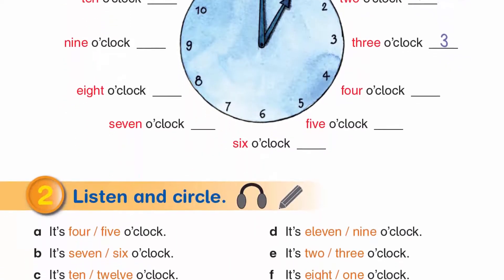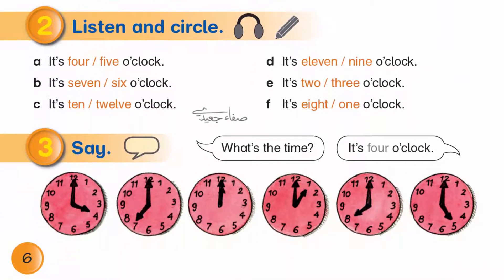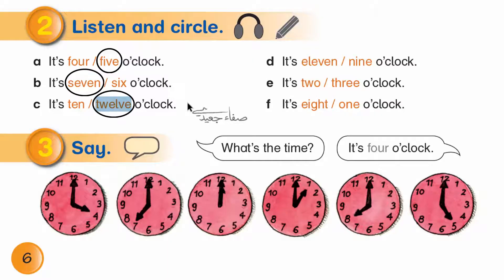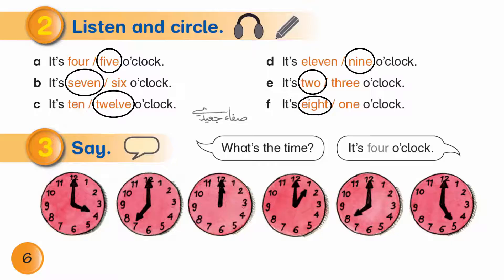Listen and circle. A. It's five o'clock. It's eight o'clock. What's the time? It's four o'clock.